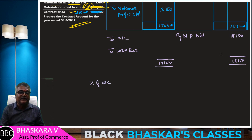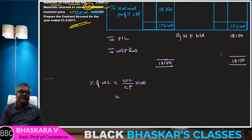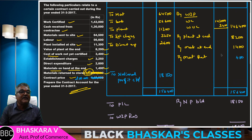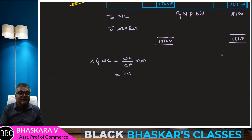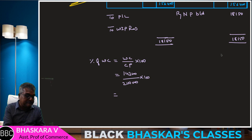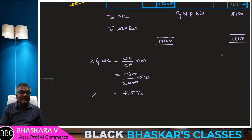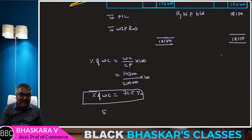We need to find the percentage of work certified. Percentage of work certified equals work certified divided by contract price into 100. Work certified is 1,43,000, divided by contract price 2,00,000, into 100 — that gives 71.5%. So percentage of work certified is 71.5%.